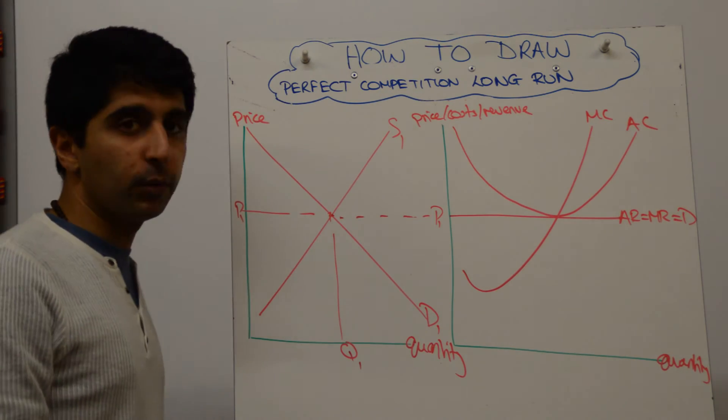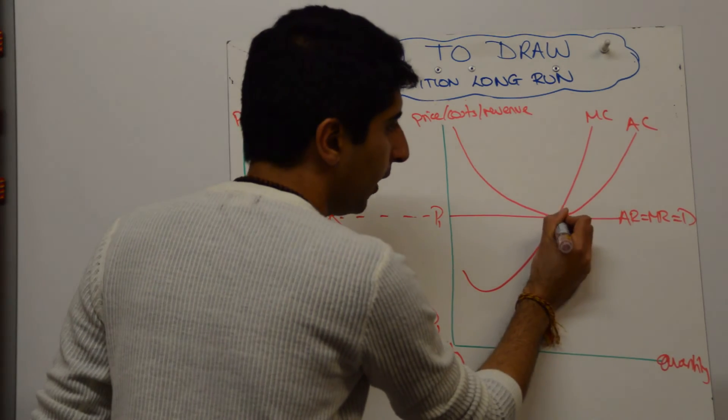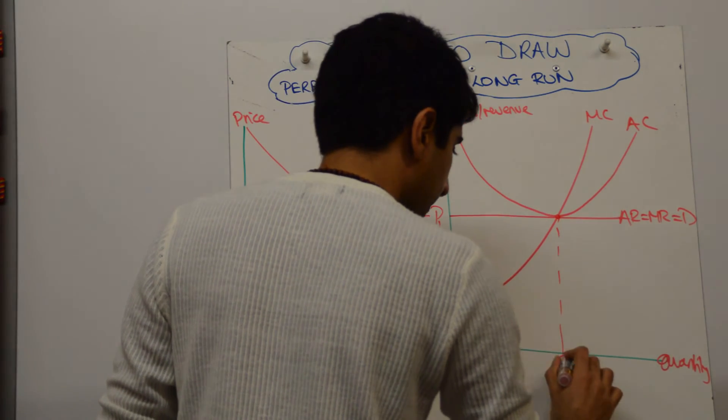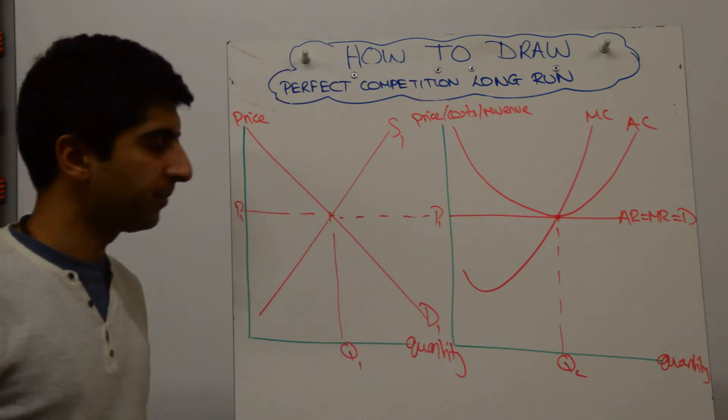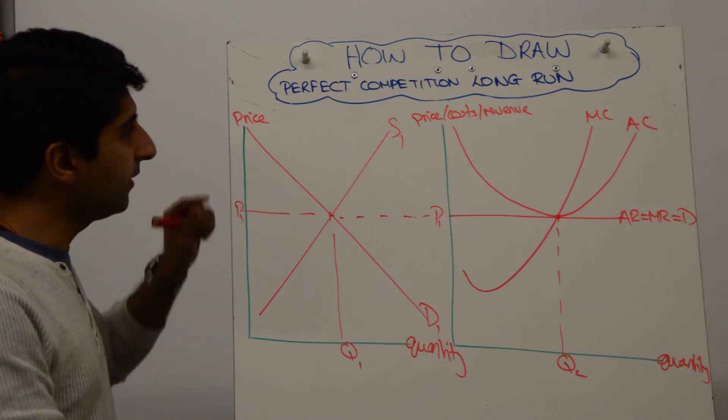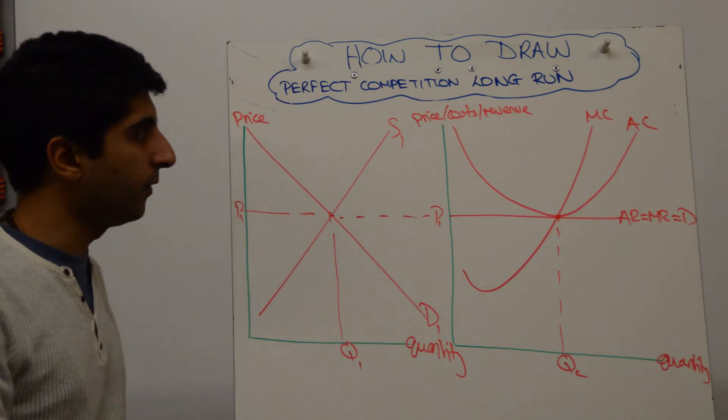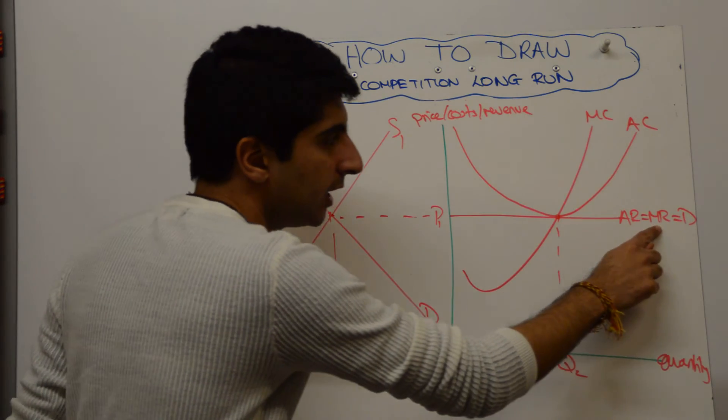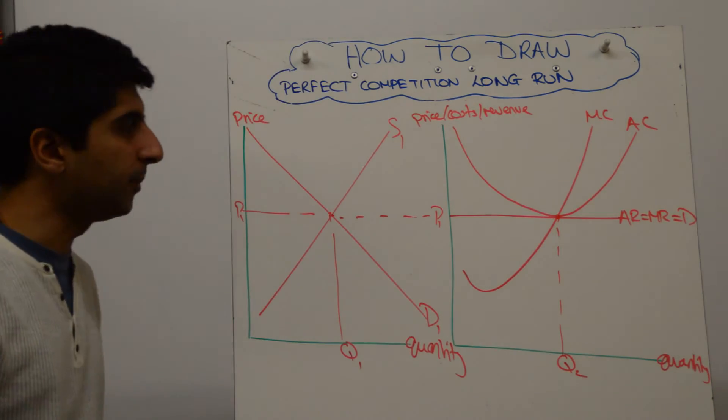Profit maximisation point is where MC equals MR, which happens to be also a normal profit. That is the long run stable equilibrium in perfect competition, call it Q2. Have we labelled our axis? Yes, we have, properly. Have we labelled all of our curves? Yes, we have, properly. That's important. Something like that, don't take liberties with. Okay, that needs to be done properly.